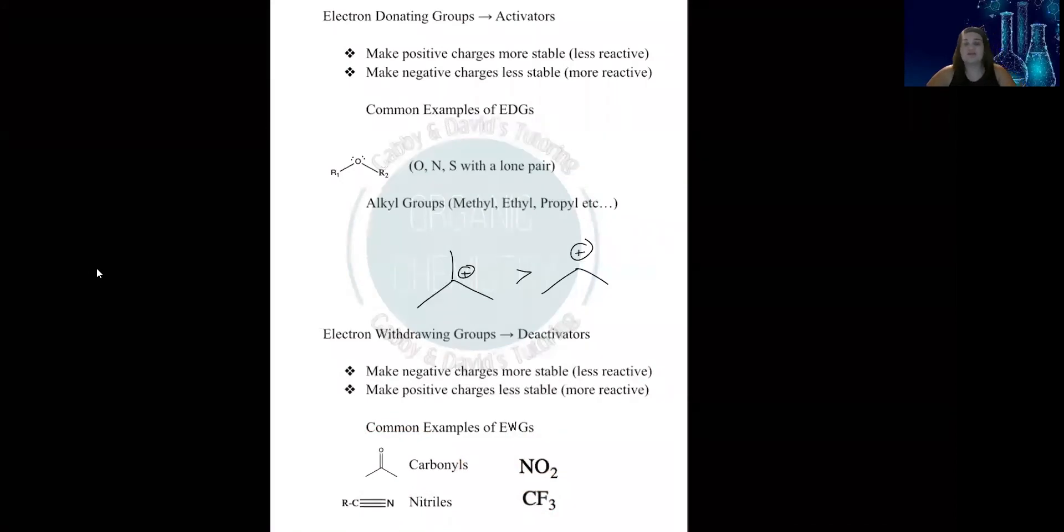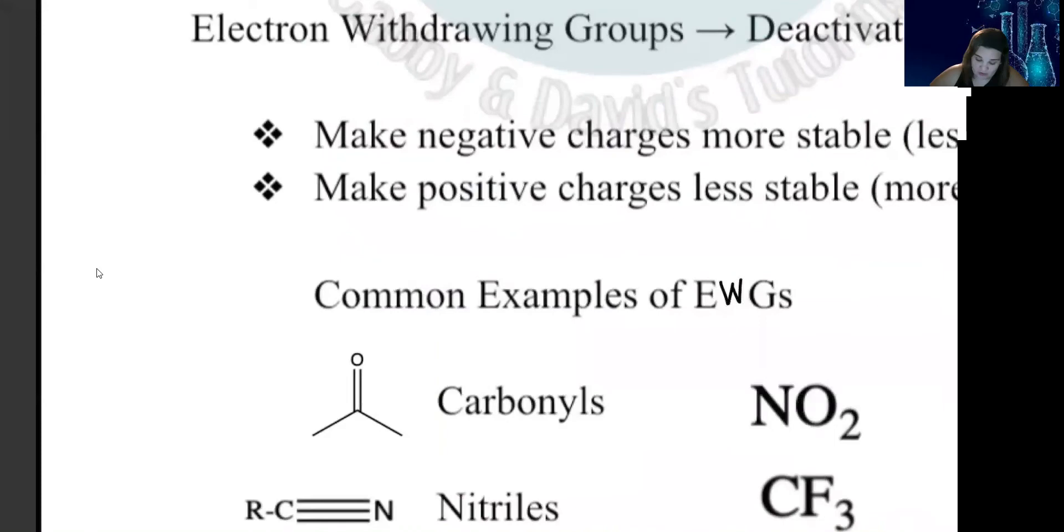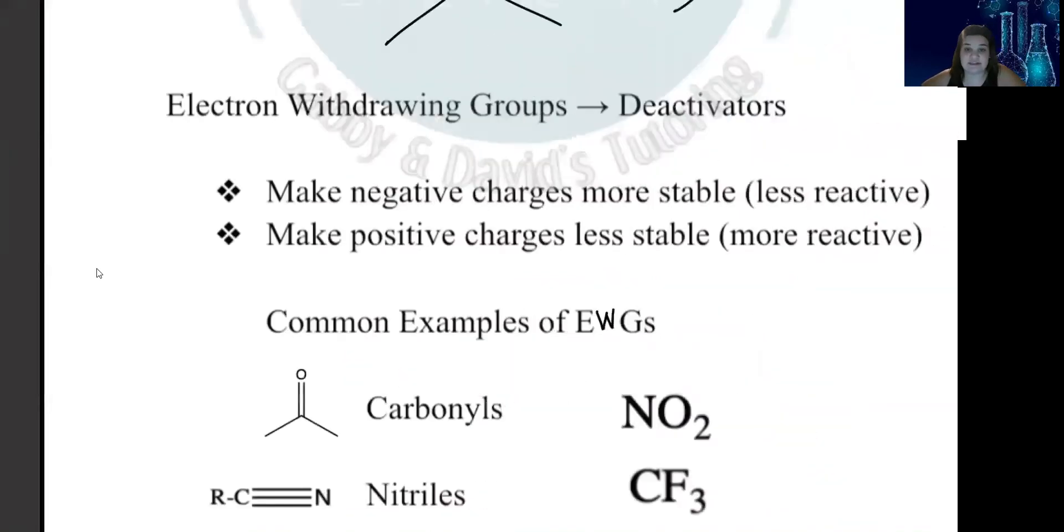When we say they're more common, it's not necessarily that they're the only ones that exist. They're just the ones you're probably going to see the most in this course. When it comes to a carbonyl, it can absorb those electrons and make itself negative. A lot of this goes back to resonance.